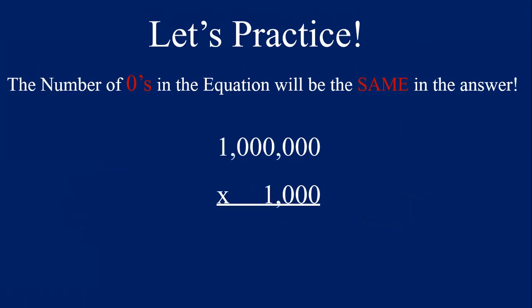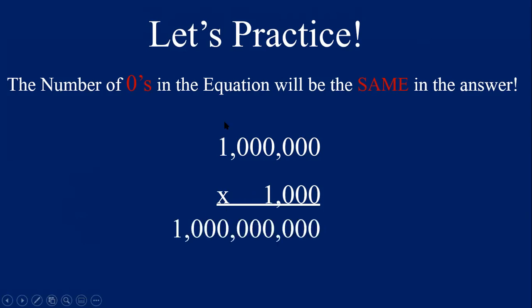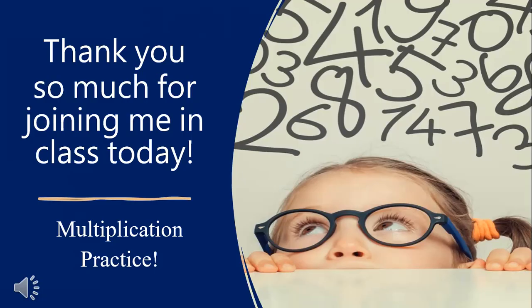Let's try a really large equation: 1 million times 1,000. Don't let the large numbers intimidate you — this is so easy with our strategy. All we have to multiply is 1 times 1, which is 1. Now count your zeros in the equation: 1, 2, 3, 4, 5, 6, 7, 8, 9. Write a 1 and then nine zeros after it, and that gives us the answer of 1 billion. 1 million times 1,000 equals 1 billion — a really large number, but so easy to calculate using our strategy.